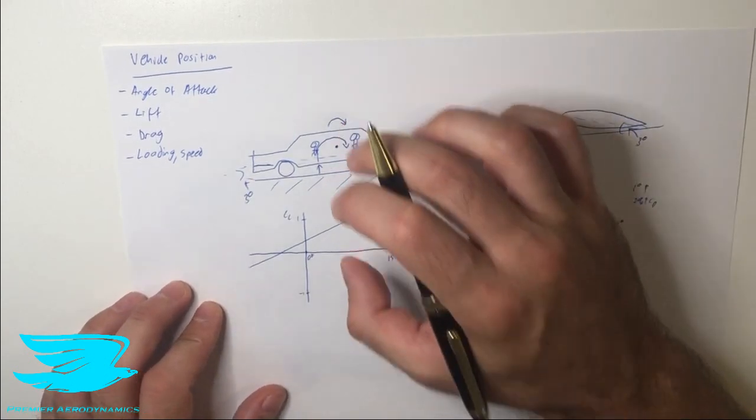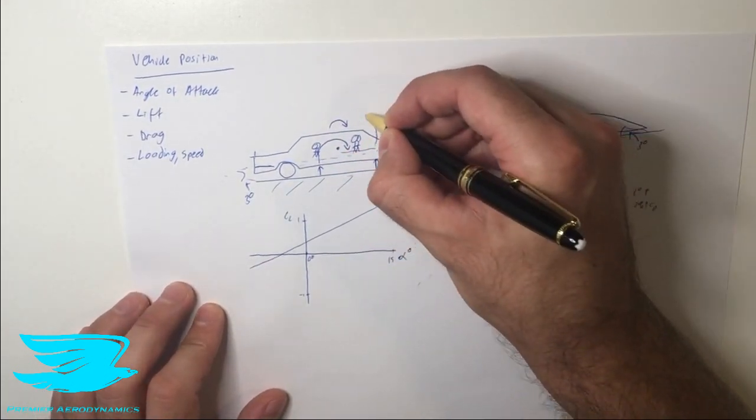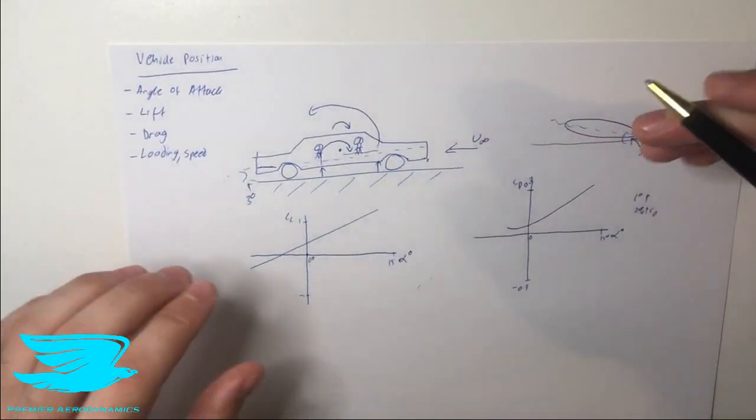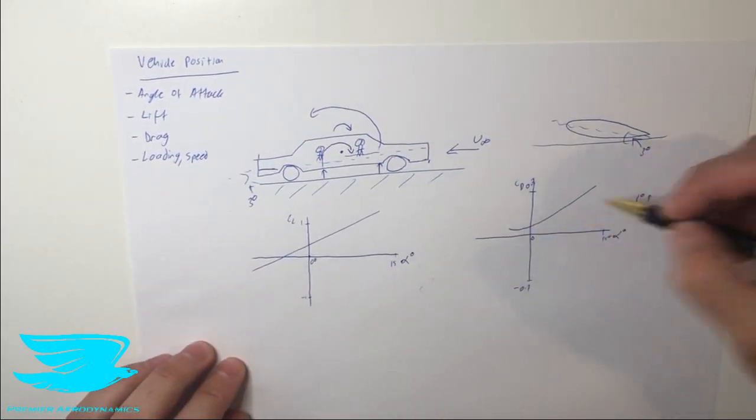Alternatively, if we have the lift being mainly produced here, so we can summate the entire lift over the car and we can say it just approximately acts through this point. Now we can see that there's quite a big moment and we're actually producing a counterclockwise moment. So the car will be nosing up, and that will increase the angle of attack, increase the lift, and so on and so forth, and also increase the drag.